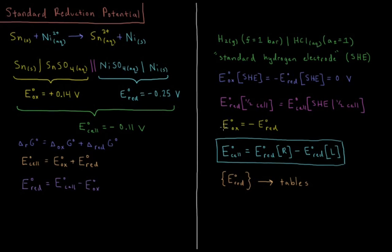We can get the standard EMF of any electrochemical cell by taking the standard reduction potential of the cathode and subtracting the standard reduction potential of the anode. Reduction occurs on the right at the cathode, so that term is positive, minus the reduction potential at the left where the oxidation occurs at the anode.